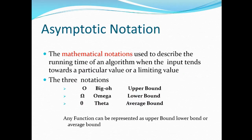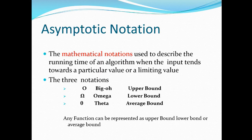Asymptotic notation is a mathematical notation used to describe the running time of an algorithm when the input tends towards a particular value or a limiting value. There are three notations: big O notation, called the upper bound; omega, called the lower bound; and theta, called the average bound. Any function representing the time complexity of an algorithm can be represented as an upper bound, lower bound, or average bound.